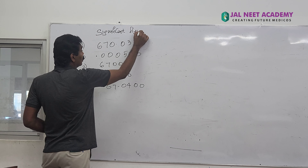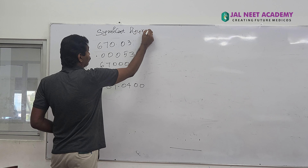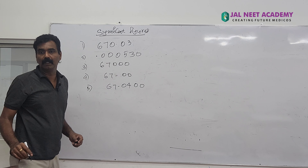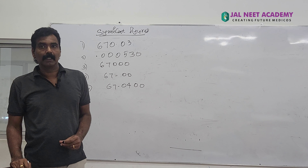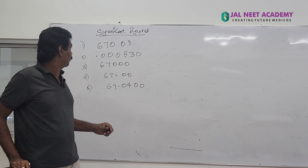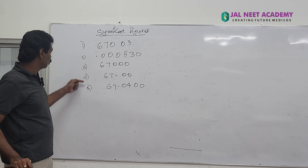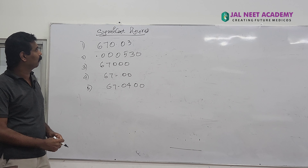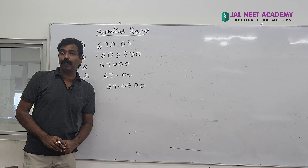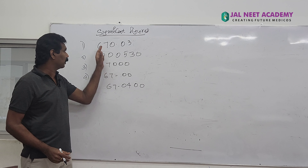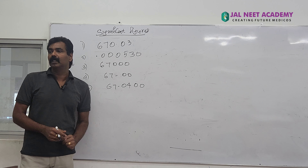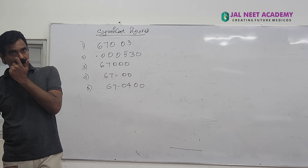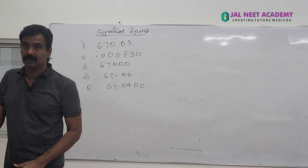Significant figures. There are numbers 1, 2, 3, 4, 5 — five numbers. Each number has significant figures.